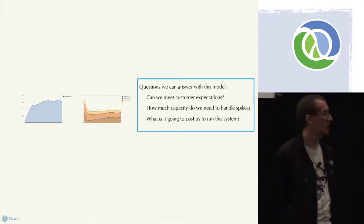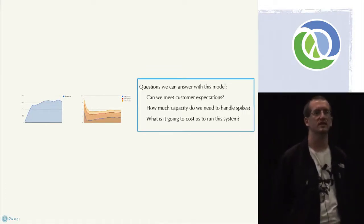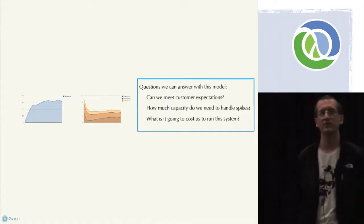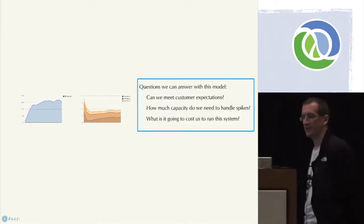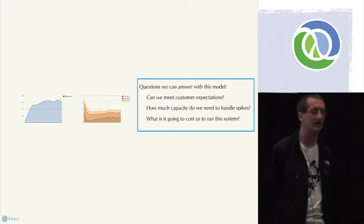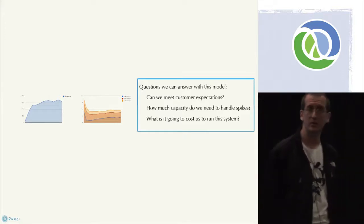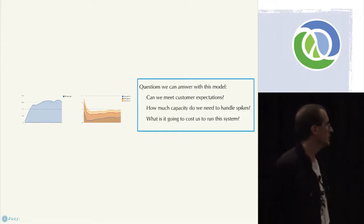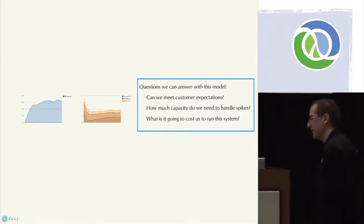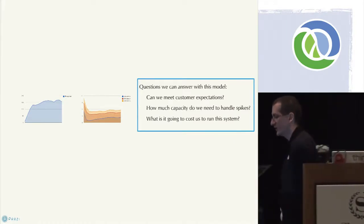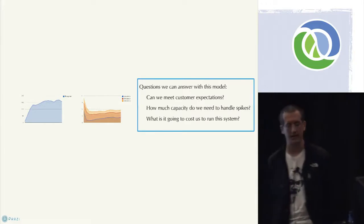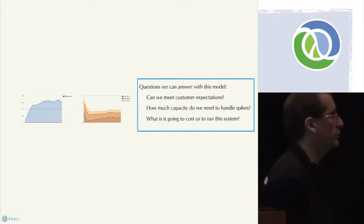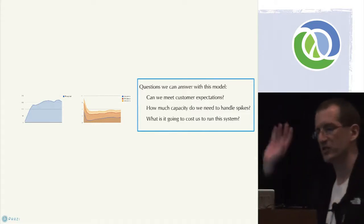Can we meet customer expectations? I've got 10 users, each hitting the system once a second, so my throughput is 10 requests per second. I need them served in less than two seconds 99% of the time — I can answer that question with this model. It's not the real world, we have some assumptions, but it's still useful. The distribution of latencies characterized by load for a given transaction mix is really super useful to look at the system that way.